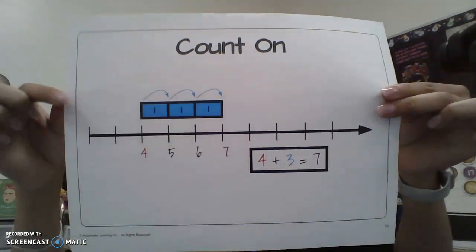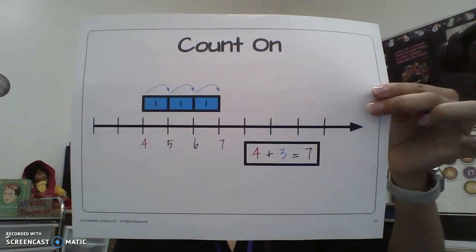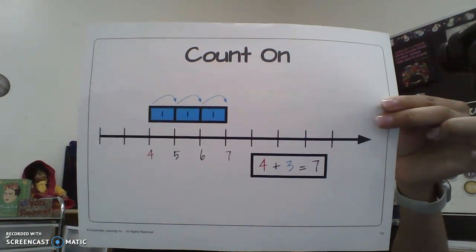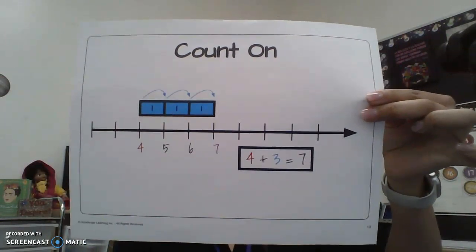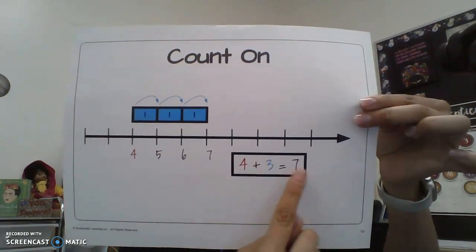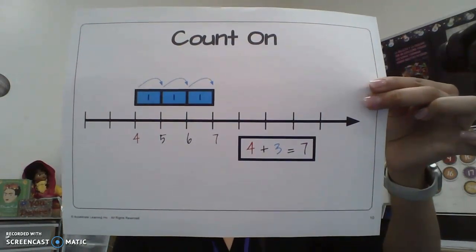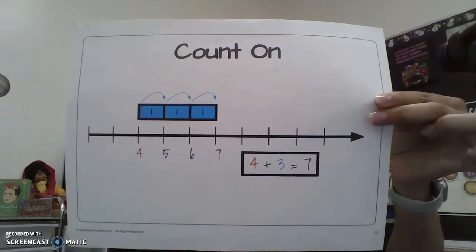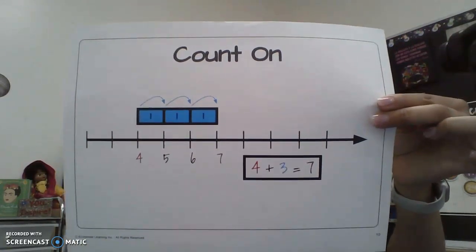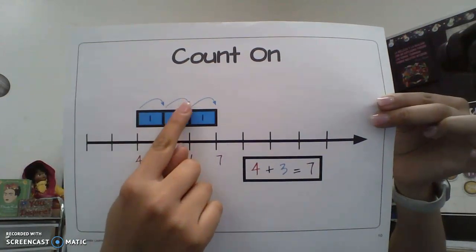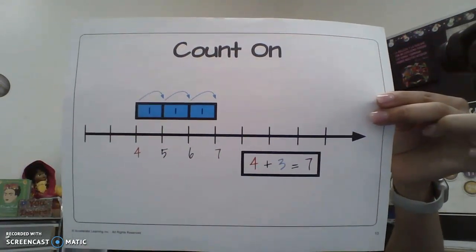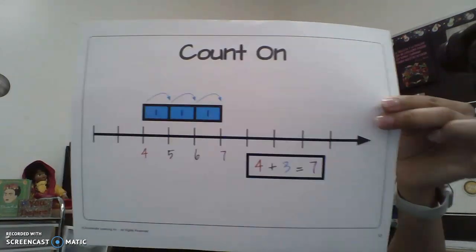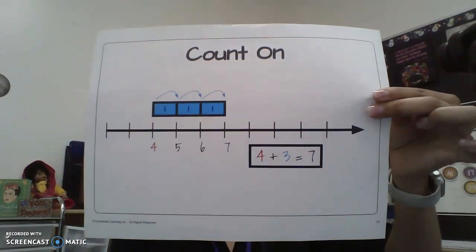Our new method is a number line. This is called counting on, or counting forward. If we start at the number four and count forward — one, two, three — we land on seven. We can make a number sentence from that: we start on four, count forward three times, and land on seven. So four plus three equals seven, and we got all those numbers just from the number line.